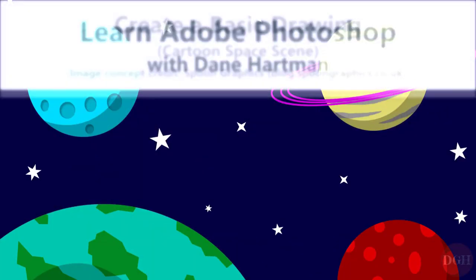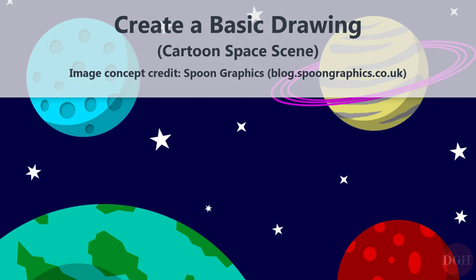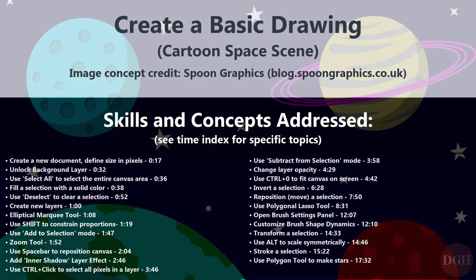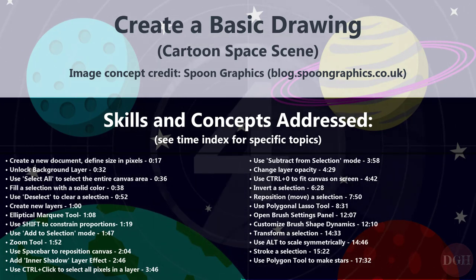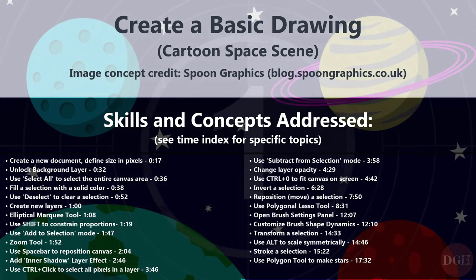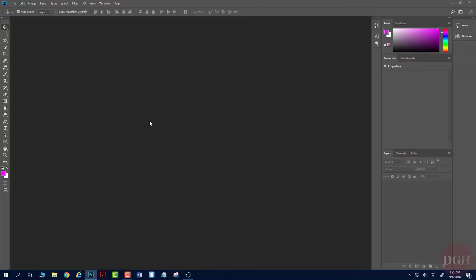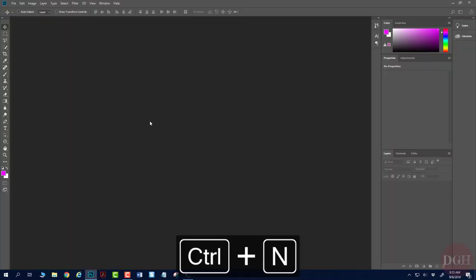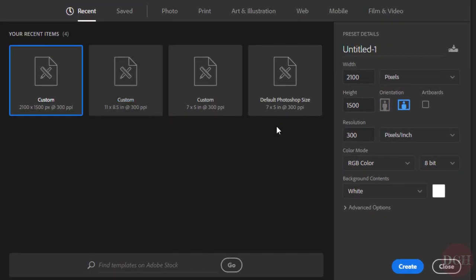In this project, we'll create a drawing of a cartoon space scene. Image concept credit to Spoon Graphics from their Illustrator tutorial. And in doing so, we'll continue to develop a number of fundamental Photoshop skills. Let's begin by creating a new document. I'll press Control-N, and let's make sure our dimensions are 2,100 by 1,500 pixels, set to pixels. Click Create.